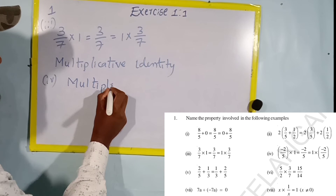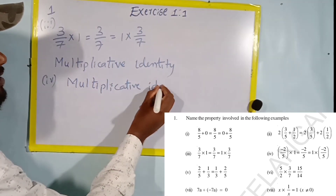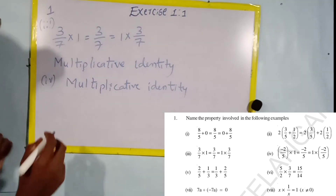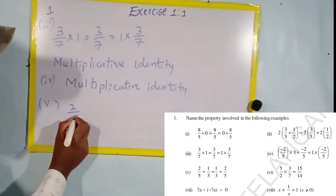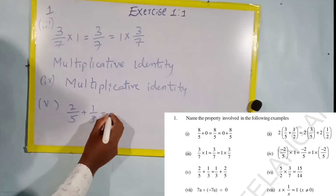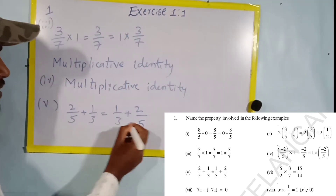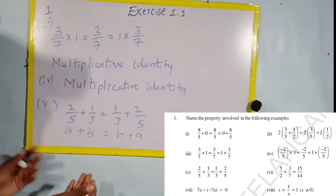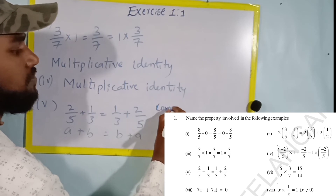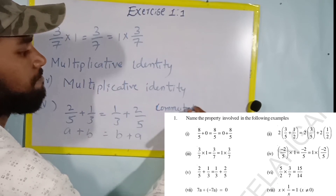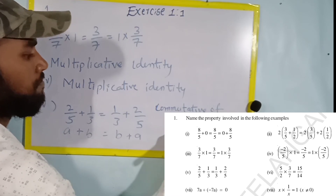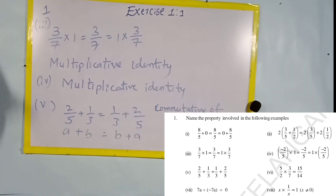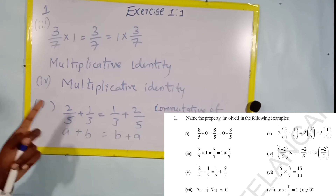Fifth one: two by five plus one by three equals one by three plus two by five. This matches a plus b equals b plus a, which is the commutative property of addition.